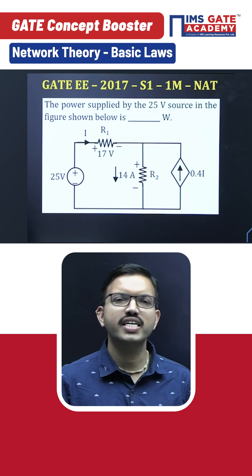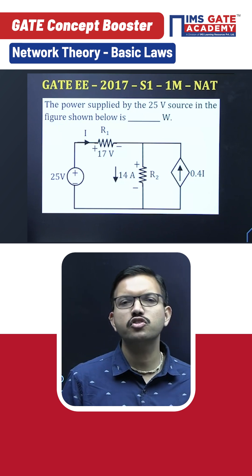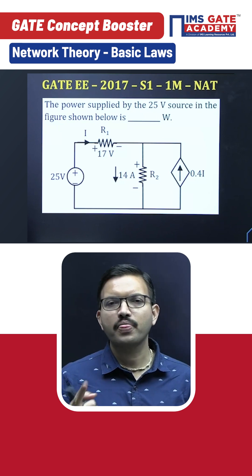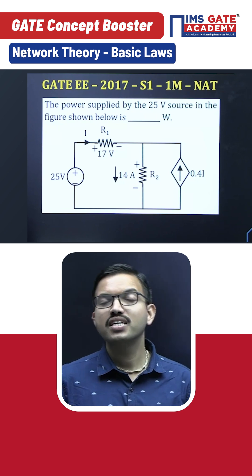Voltage source value already you know is 25. How much current is flowing through that particular 25 volt source? If you multiply 25 with i, that is the final answer.